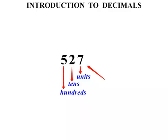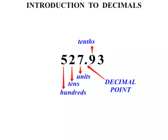Now, if we put something after that whole number — a point — that is known as a decimal point. It separates the whole number part from the decimal part. And let's say we had a 9 and a 3 in those positions. That 9 is in the tenths position, and the 3 is in the hundredths position. So that's what we're going to look at today: tenths and hundredths. Just a note on that decimal point — its position can either be at the bottom or moved up; you might see both. It means exactly the same thing.